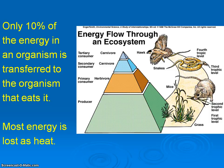The bottom is the largest area because there are more producers on the planet than any other type of organism — more plants than any other organism. After that, your primary consumer would be your herbivores, and the further up you go, the smaller you get.